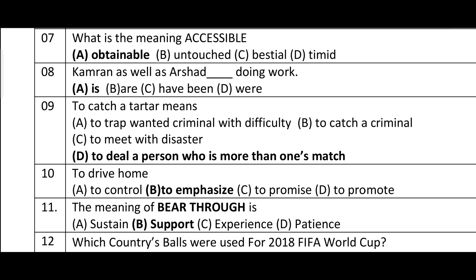Question number seven: what is the meaning of 'accessible'? The synonym of accessible is 'obtainable'. Option is correct. Question number eight: 'Kamran as well as Arshad is doing work' — the correct verb form is 'is'.